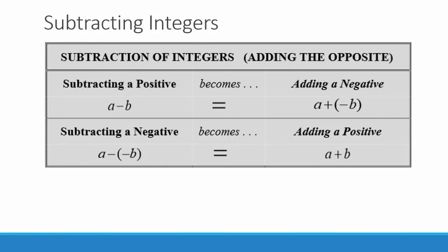Subtracting integers. In order to subtract integers we're going to change any subtraction sign to adding the opposite. So when we have a minus b we're going to change it to a plus negative b. And if we have subtracting a negative — a minus negative b — we're going to change it to adding a plus b. Then we will use our rules for adding integers.